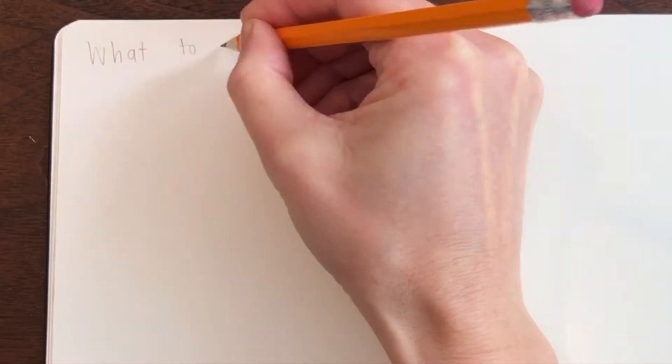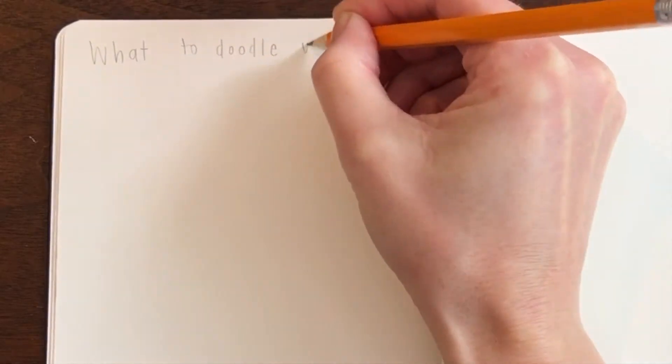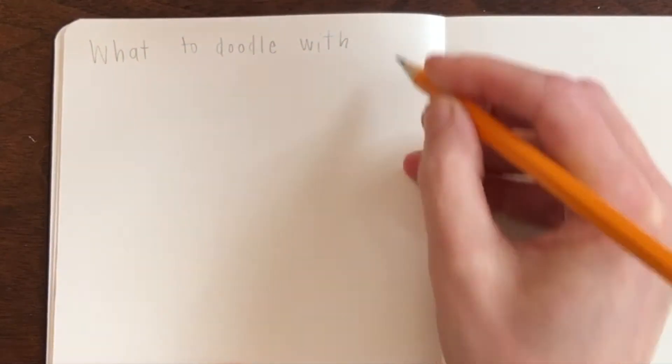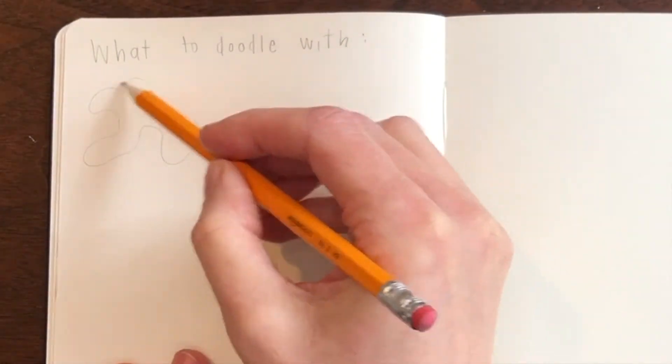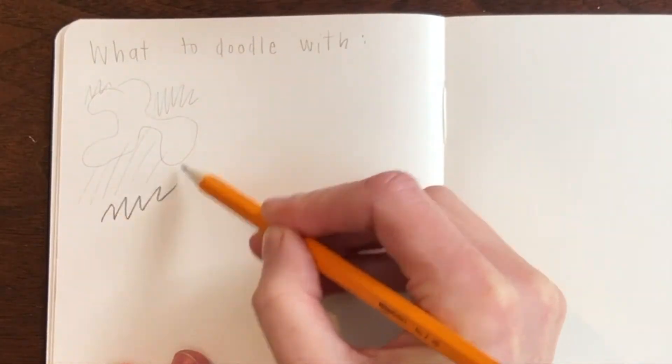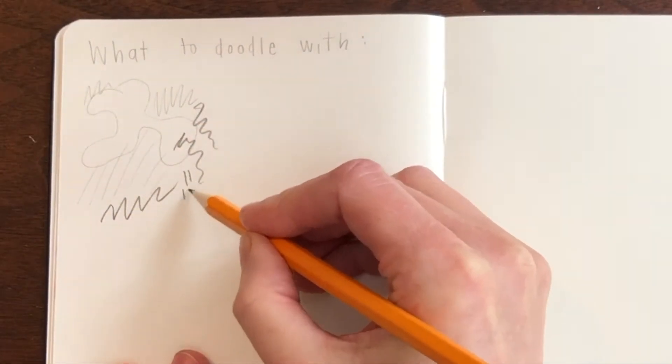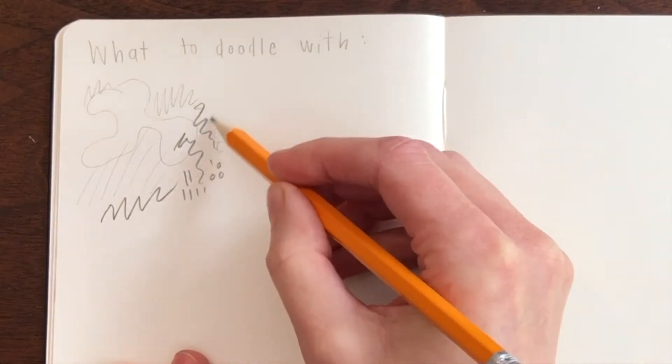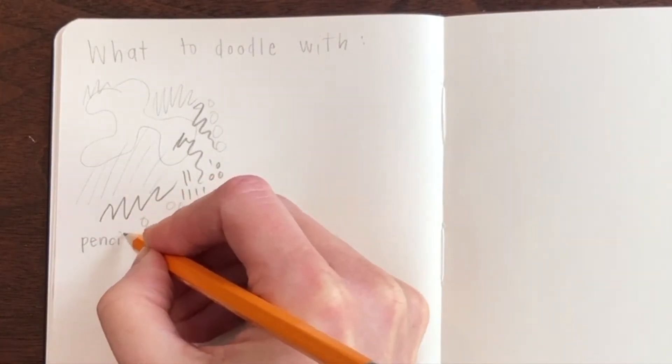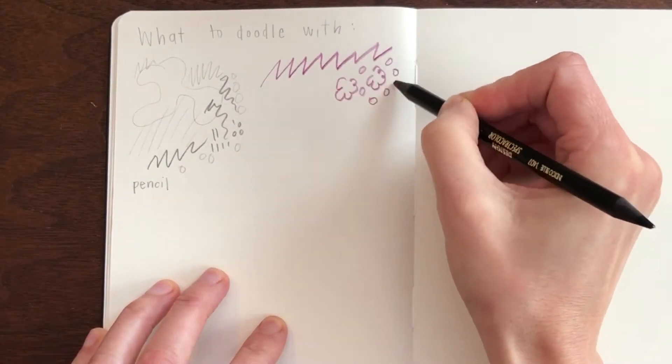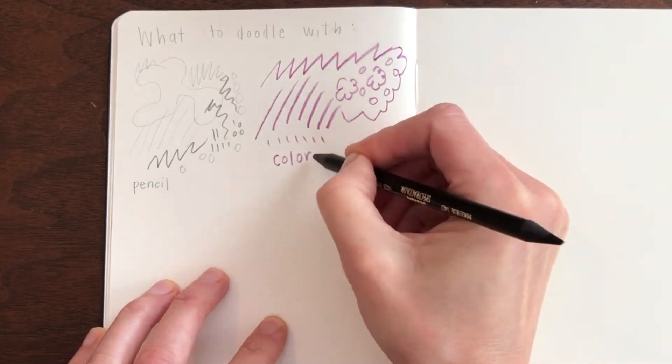I'm going to start by showing you a few different things that you can use to make your doodle. The first thing I'm going to show you is the pencil I'm holding in my hand right now. A nice thing about using a pencil is making both dark marks and light marks depending on how hard you push. You can also doodle with colored pencil if you want something a little bit more colorful.